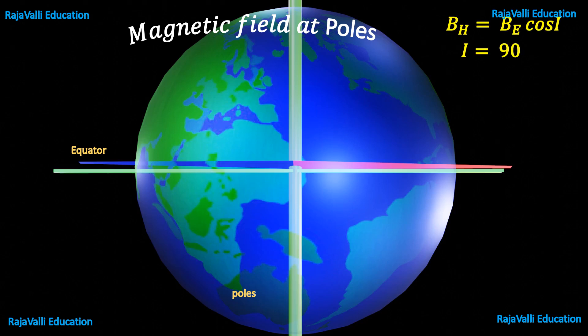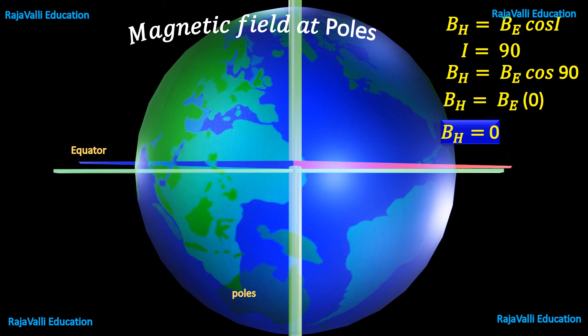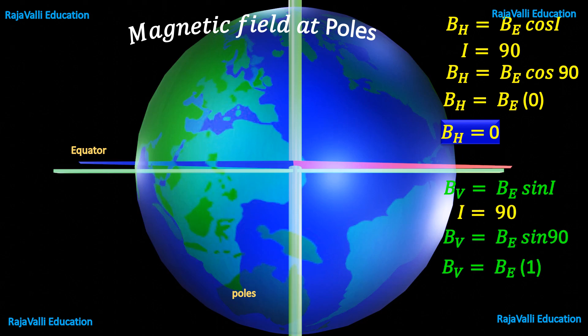Here I value is 90. We know that cos 90 is 0, so BH value becomes 0. Similarly, we can find out the vertical component value. sin 90 is 1, so BV is equal to BE.